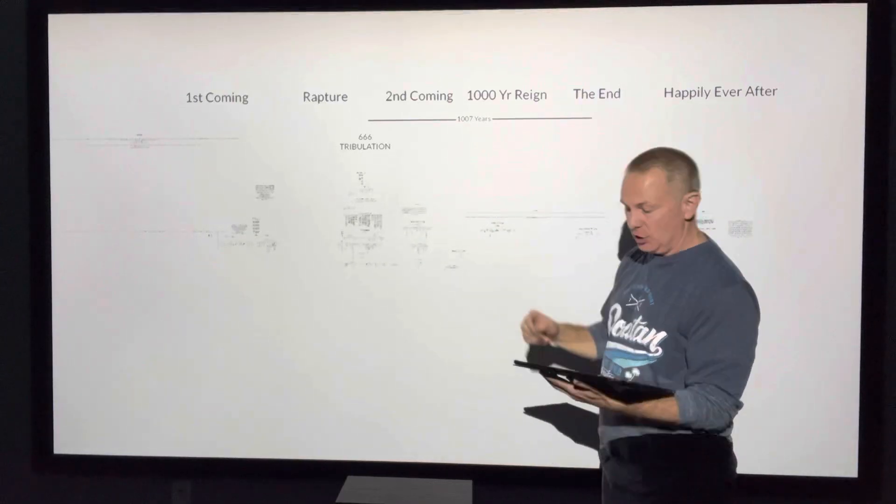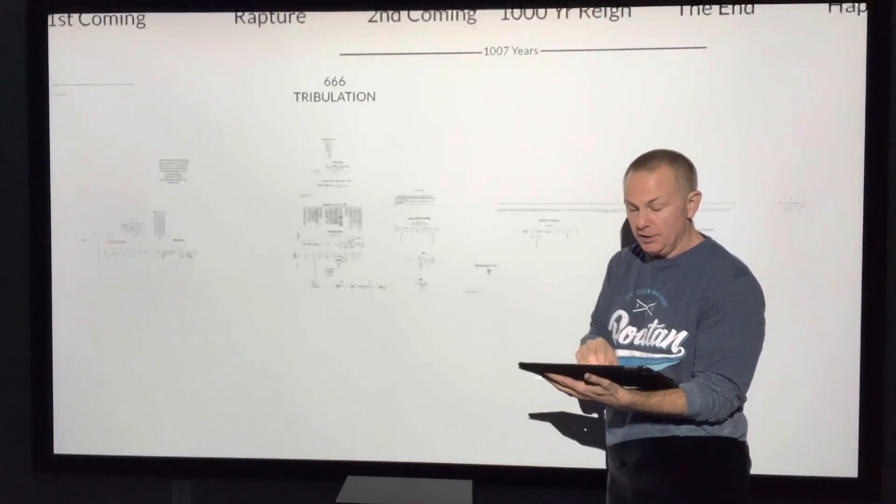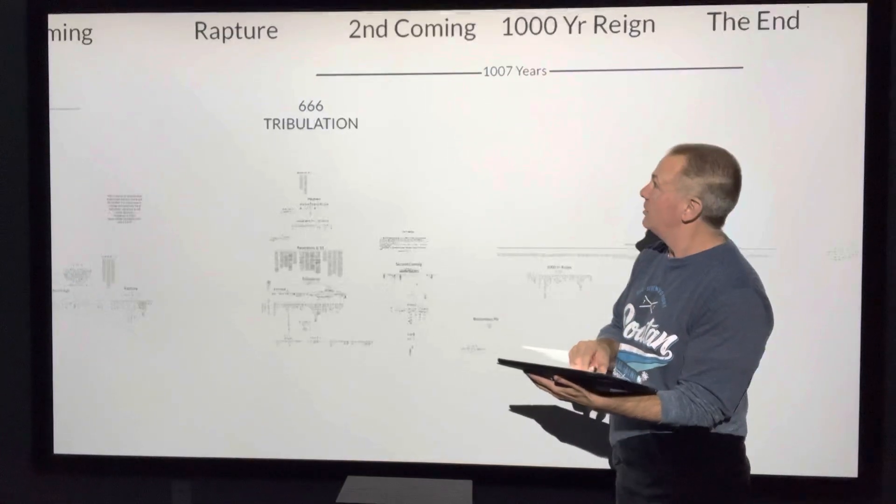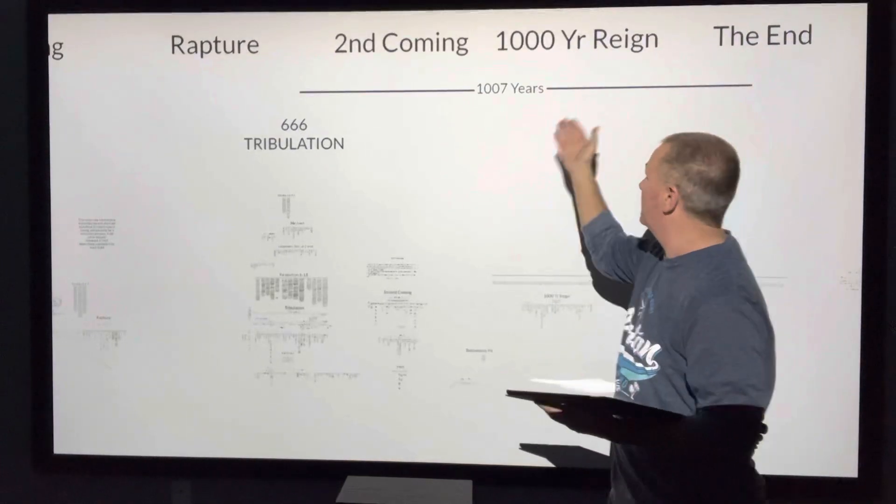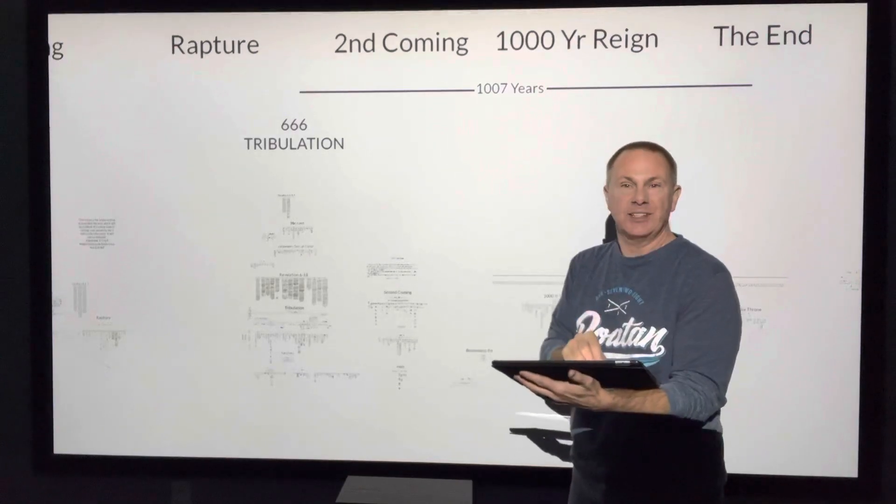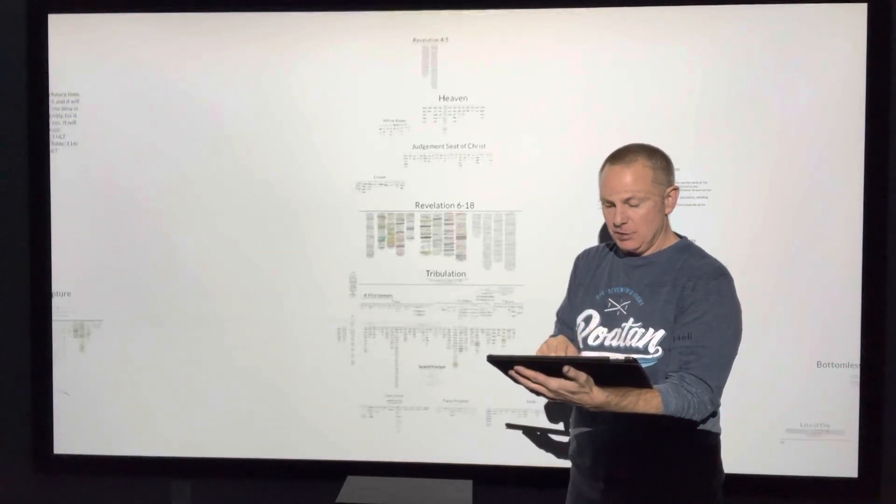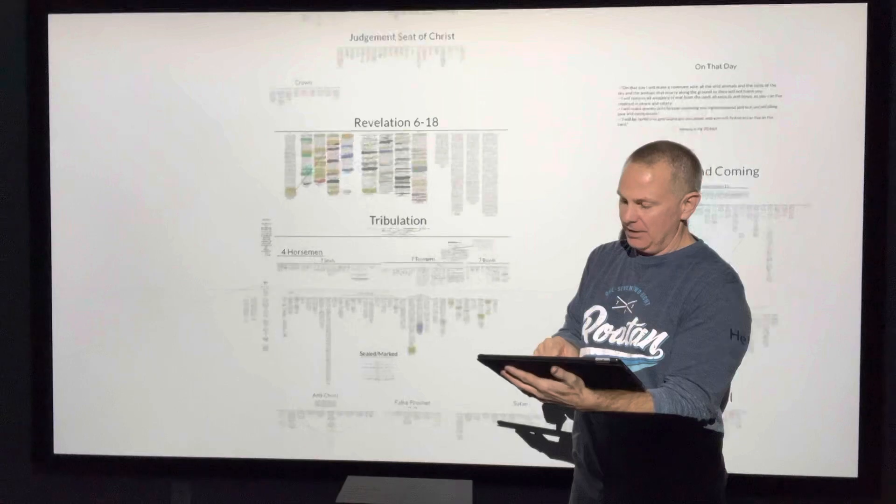We'll specifically talk about some things we put together. As you can see, some major things are up here: rapture, second coming, thousand year reign, the tribulation, 666. These are major things that we really need to talk about that are in the scripture we're reading.